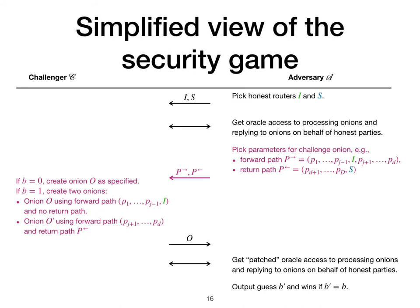Since it can be cumbersome to directly prove that an onion encryption scheme realizes F-Rows, we also present a game-based security definition that proves to be both sufficient and almost necessary for realizing F-Rows. We now describe the salient points of the security game. First, the adversary picks two honest parties, I and S. Next, the adversary gets oracle access to process onions and reply to onions on behalf of I and S.